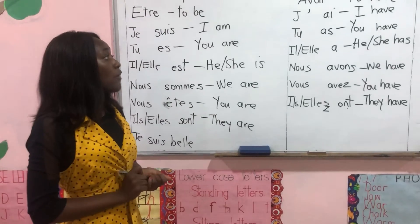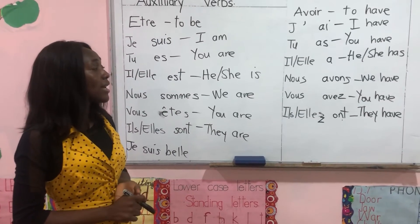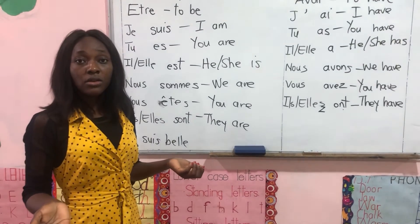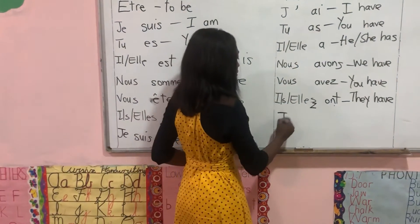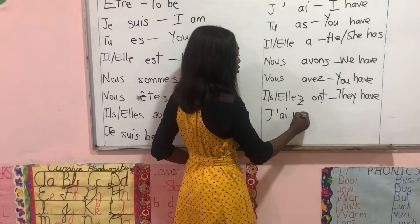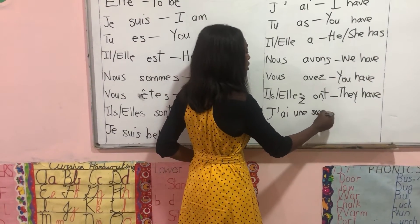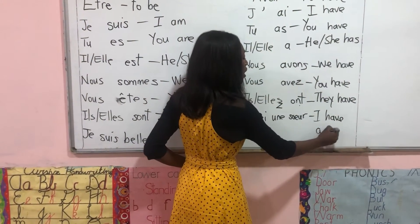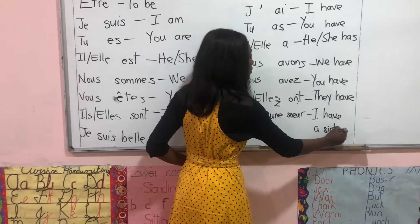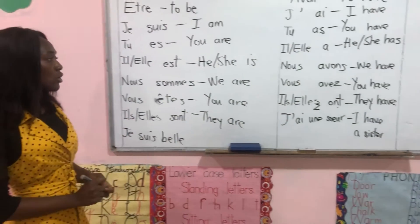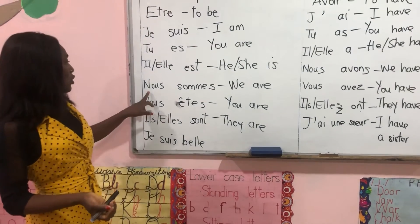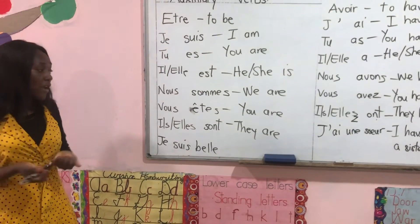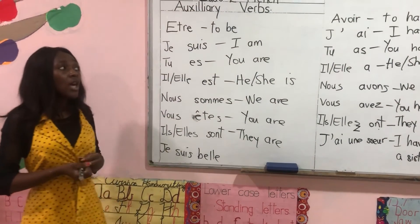For example, I can say j'ai une sœur — it means I have a sister. I can also make a sentence: nous sommes amis — we are friends.